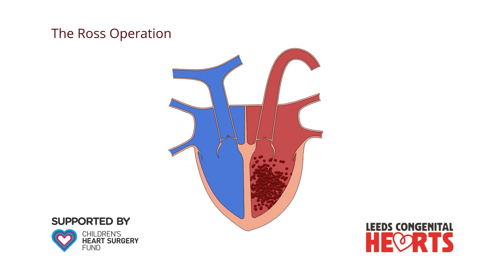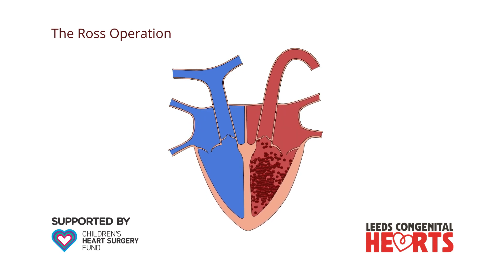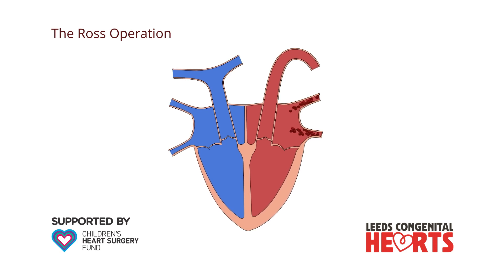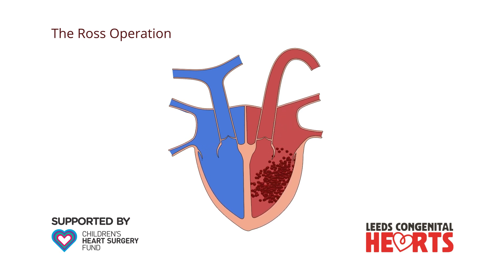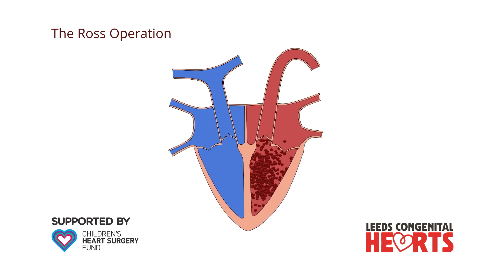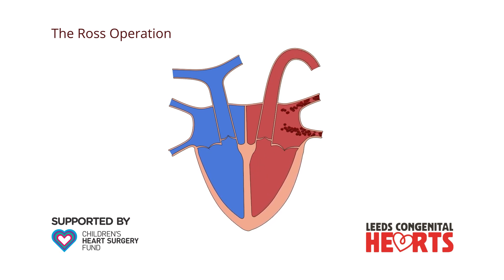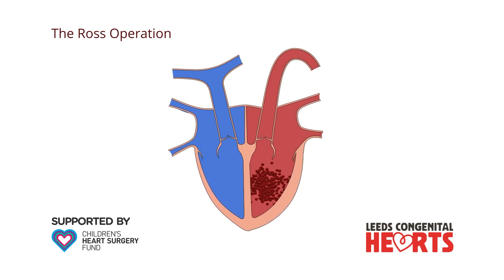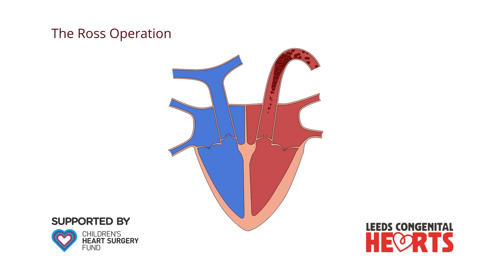When aortic valve surgery is required, the most common operation is to implant a new valve, either mechanical or tissue. We explain these in our video on bicuspid aortic valve. In some patients, the ROS operation is an alternative option to standard valve replacement.